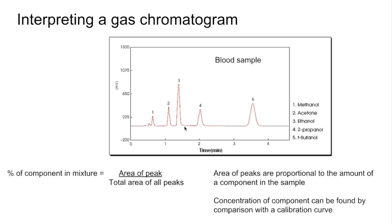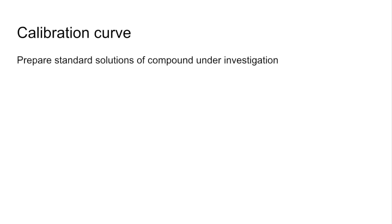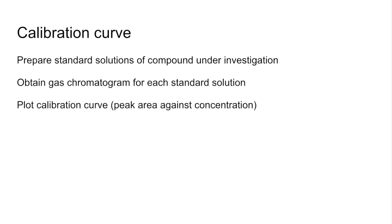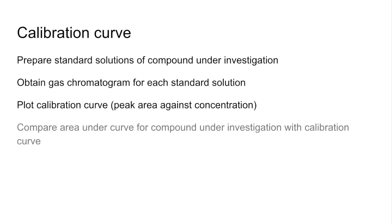We can measure the concentration of a component by comparing it with a calibration curve. You'd prepare solutions of known concentration of the compound you're investigating—standard solutions. Obtain a gas chromatogram for each, then plot the calibration curve with peak area versus concentration. Once we run our sample and measure the area of that peak, we can compare it with our calibration curve to get the concentration in our sample.